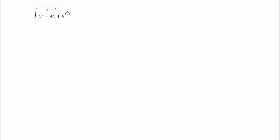So the first step is to factor the denominator. This denominator factors to x minus 2 times x minus 2, and the numerator stays the same as x minus 1.